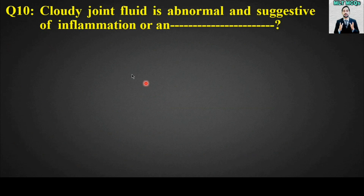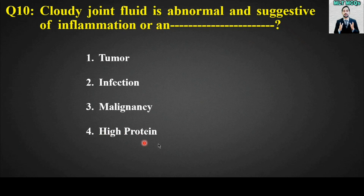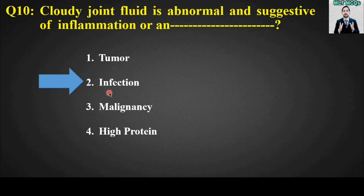MCQ number ten: Cloudy joint fluid is abnormal and suggestive of inflammation or a blank. Options are: tumor, infection, malignancy, or high protein. The right answer for this MCQ is option number two — infection. Cloudy joint fluid is abnormal and suggestive of inflammation as well as infection.